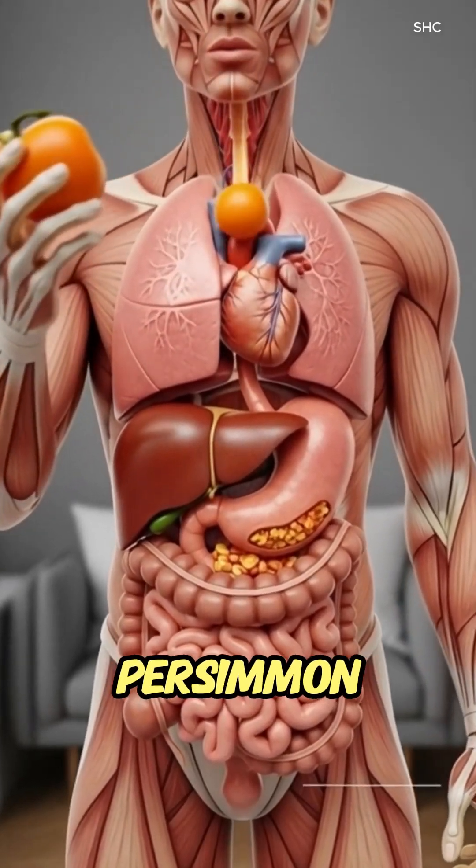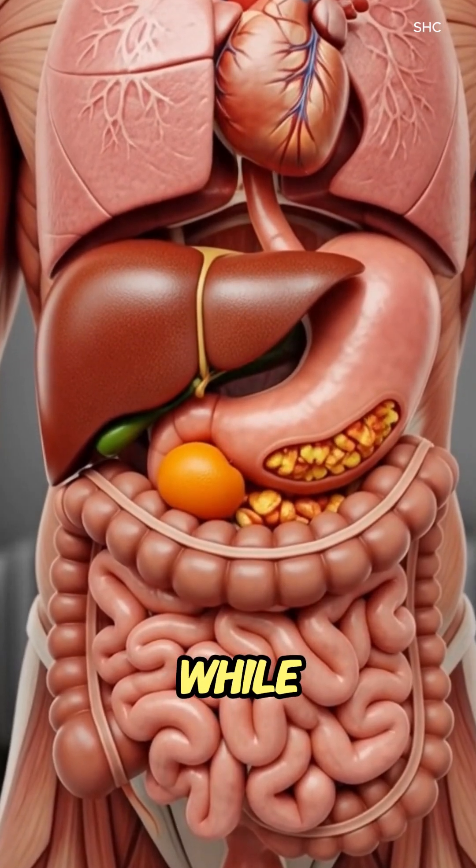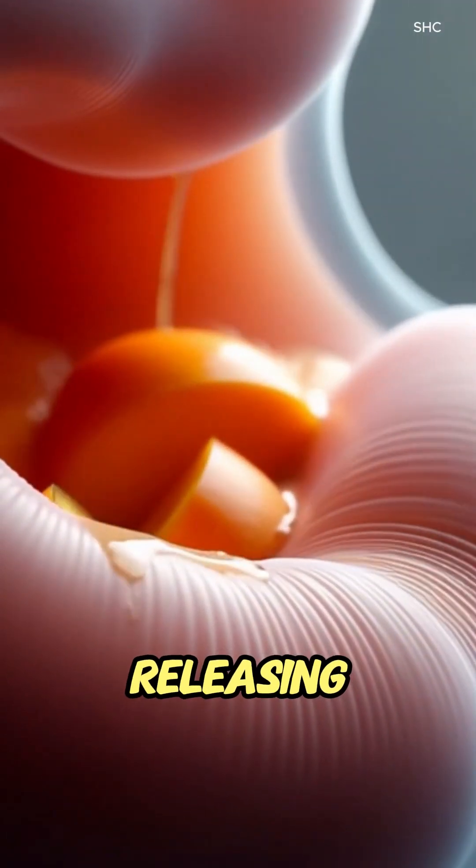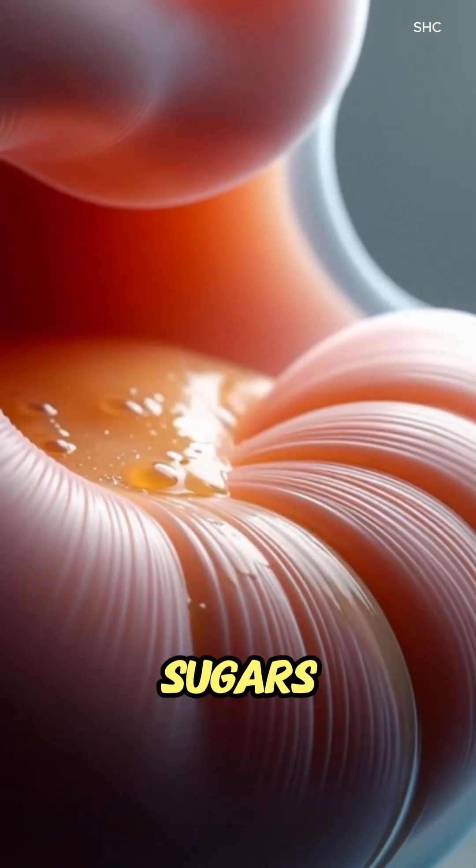As you bite into a ripe persimmon, your teeth crush the soft, fibrous flesh, while saliva mixes in, releasing amylase enzymes that begin breaking down natural sugars.